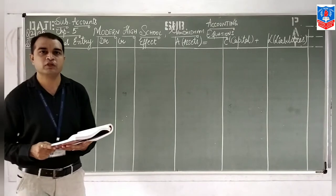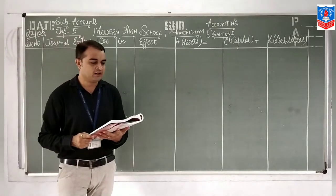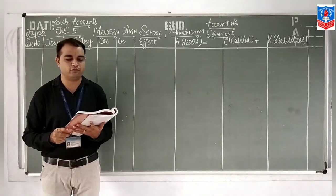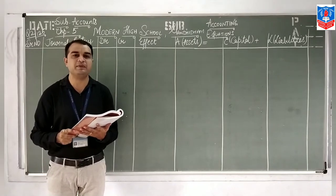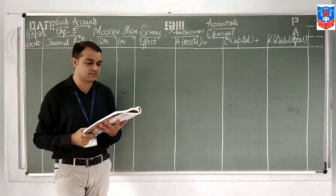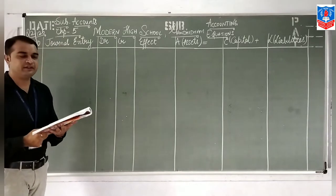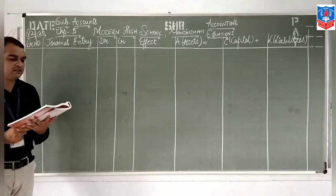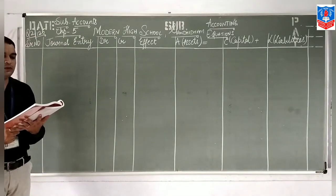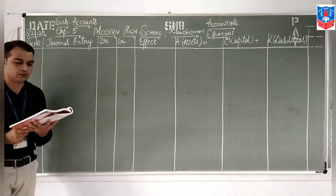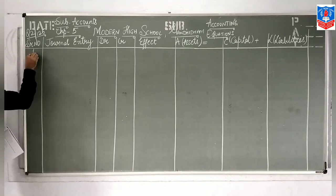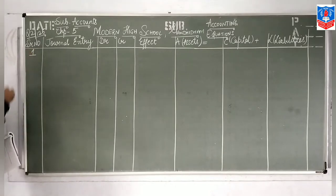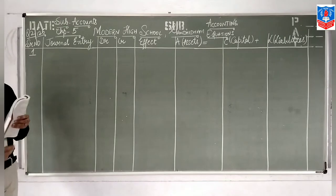We will start with question number 2: write journal entries for the following transactions and explain accounting treatments based on equations. I will read the first transaction: it is 'commenced business with capital of 80,000.' In the serial number we will write number 1. Journal entry chapter you have already covered.